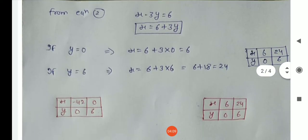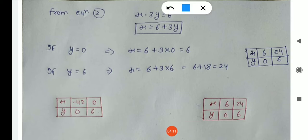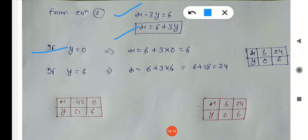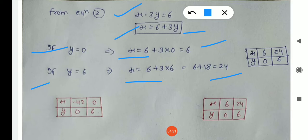Similarly for equation two: X minus 3Y equals 6, so X equals 6 plus 3Y. Putting Y equals 0 gives X equals 6. Putting Y equals 6 gives X equals 24. We arrange these values in a table to use for plotting the graph.